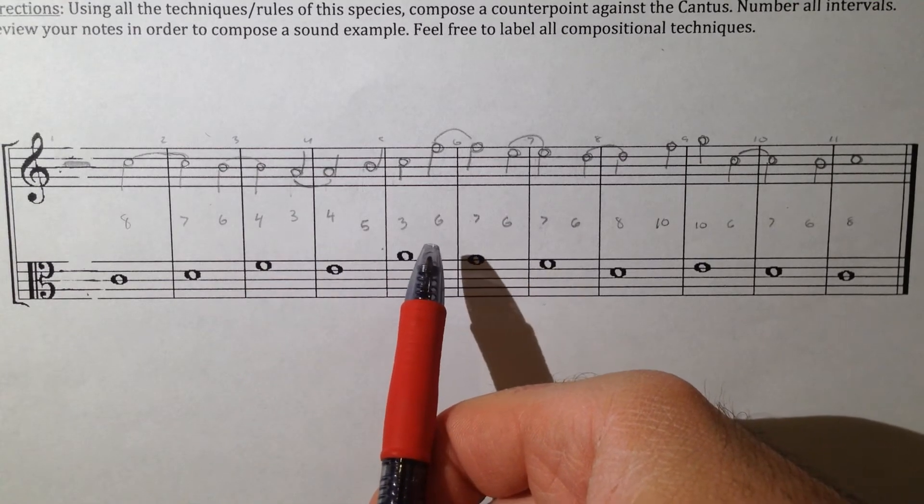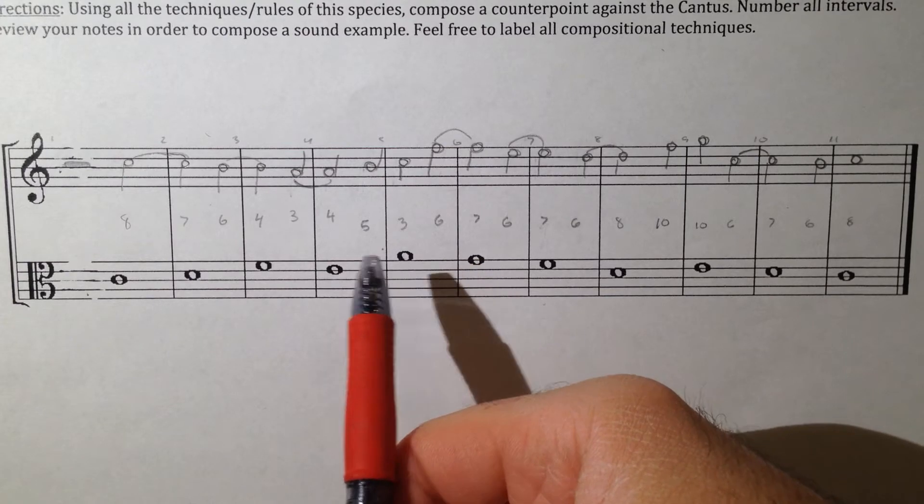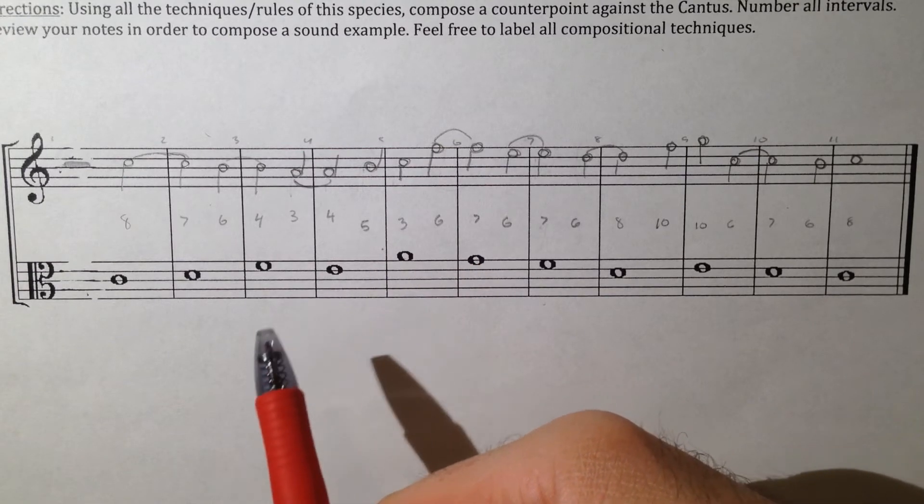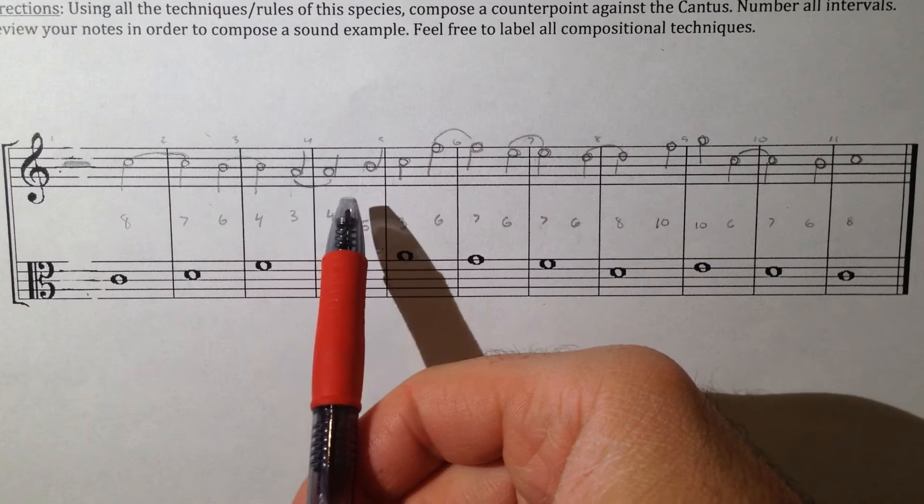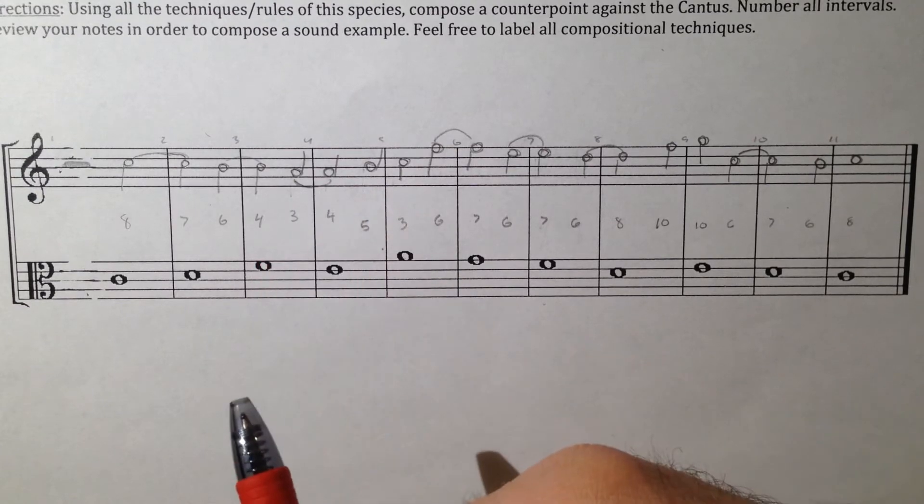Also, there can be no unprepared dissonances, so no 2s, 4s, 7s, or 9s without being tied over via suspension.